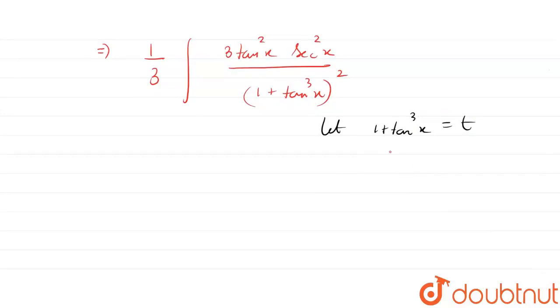Let us differentiate this. We will get 3tan²x, and then differentiation of tan is sec²x, which equals dt/dx. So this whole term here becomes the dt part.